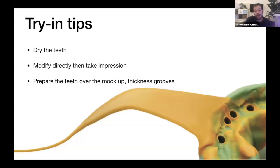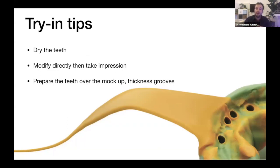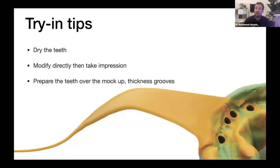Dry the teeth because the material won't stick on a wet surface and will just come out with your impression, requiring you to repeat the process. Modify the mock-up directly — check the results with your patient, check canting, protrusion, and overall appearance. Don't assess translucency or color because it's just plastic — it's too soon to judge those. You can make direct modifications: if the patient says 'maybe it's too long,' shorten them; if they want shorter canines, adjust those; maybe narrower incisors. Do everything you want now.